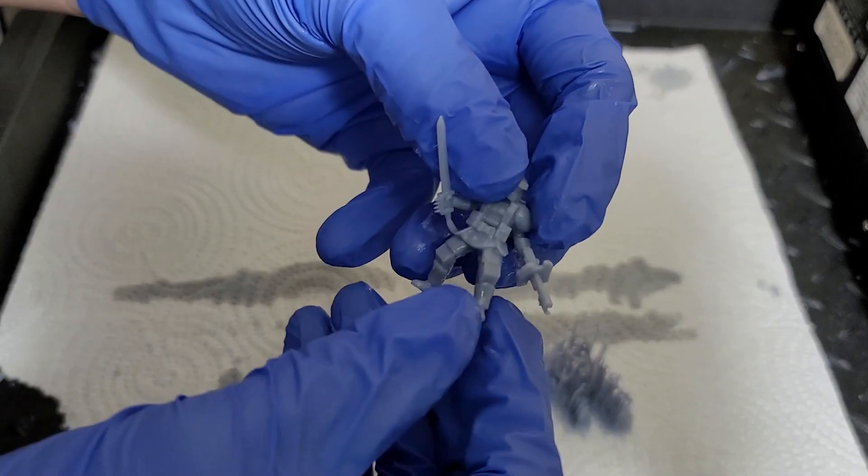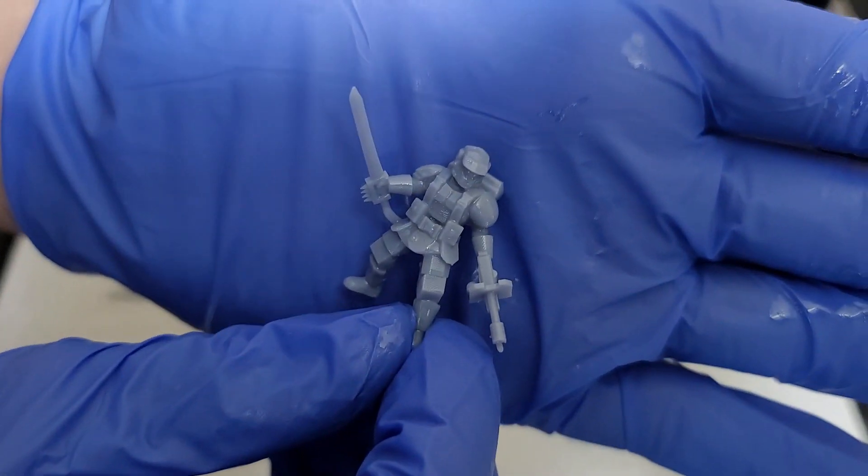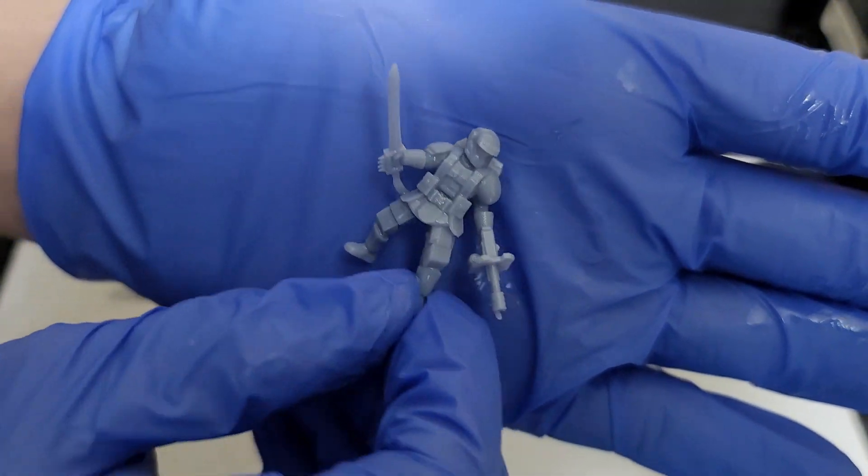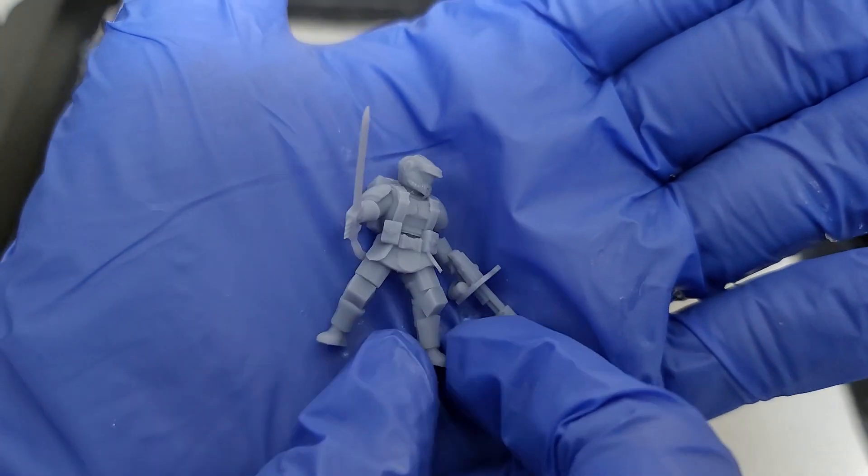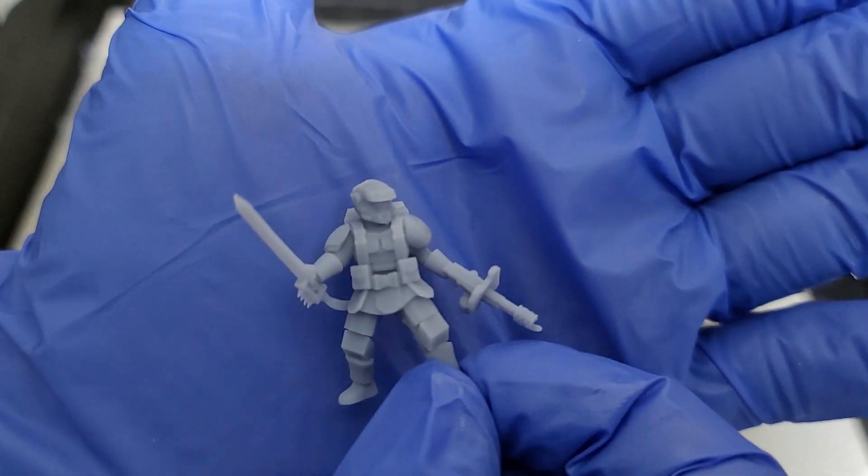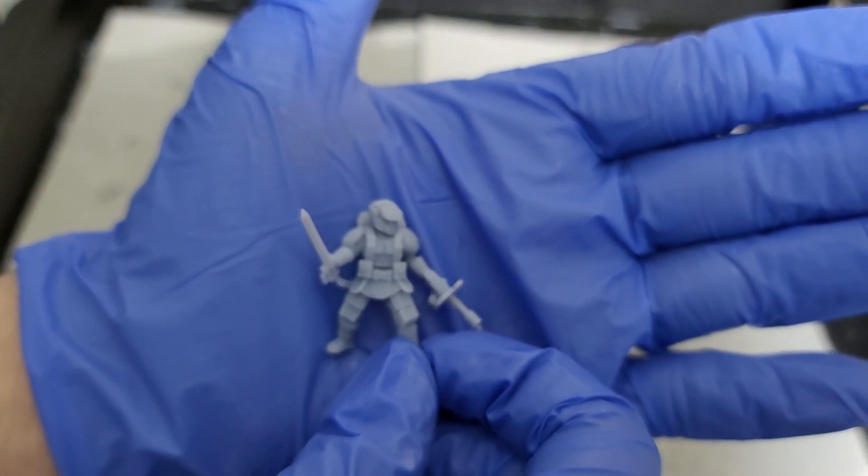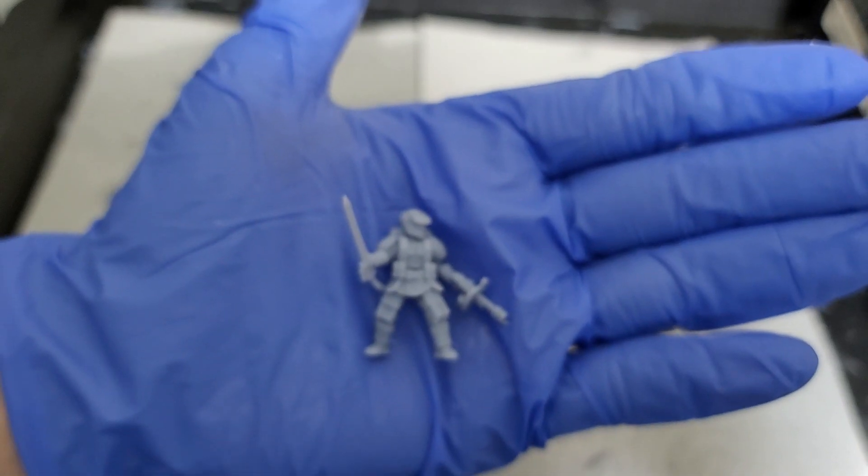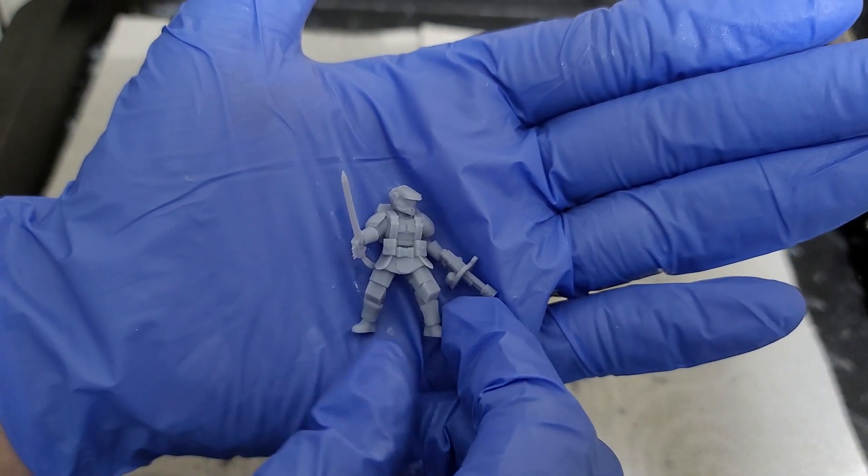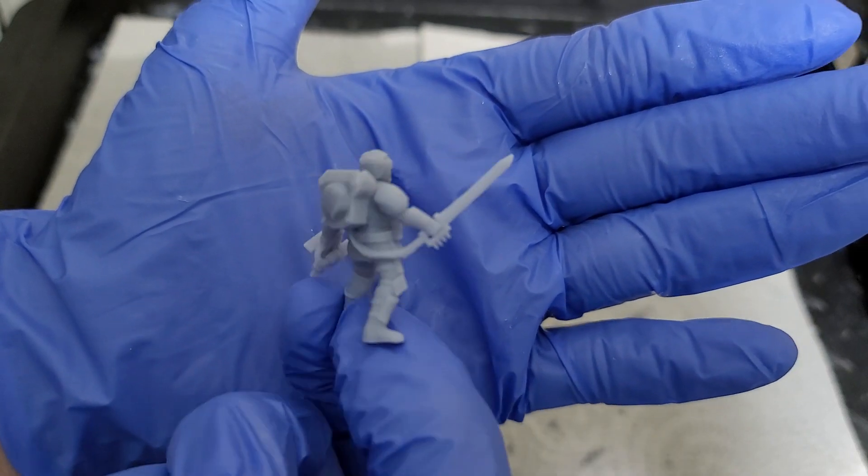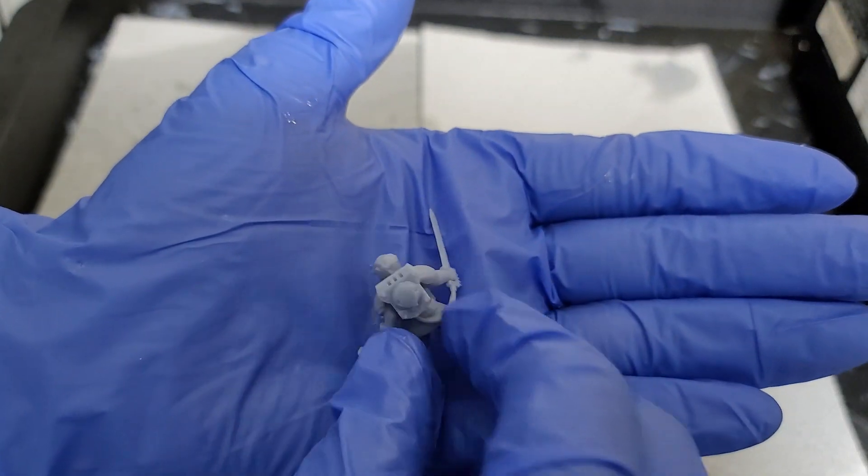So what I would do is I would use this test matrix to give a just ever so slight overexposure setting on it, and then go test print a model that you know where the supports work. Once you test print that model, you can see, okay, how much detail did you actually lose, and how much detail are you trying to get out of the model, and then from there, you can slowly work your settings downward on the exposure time until you can finally get a nice successful print while also maintaining enough detail to satisfy your needs.